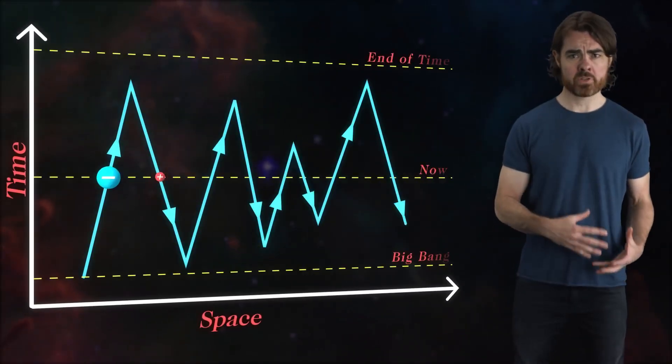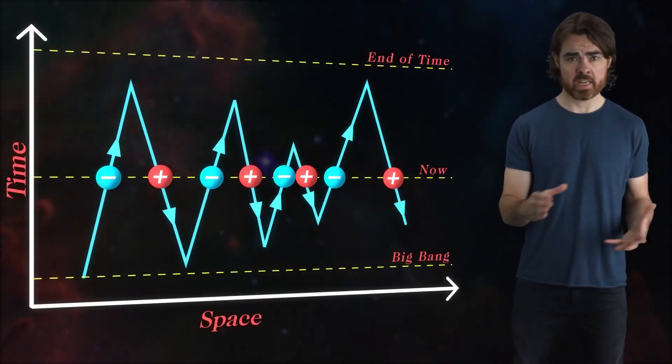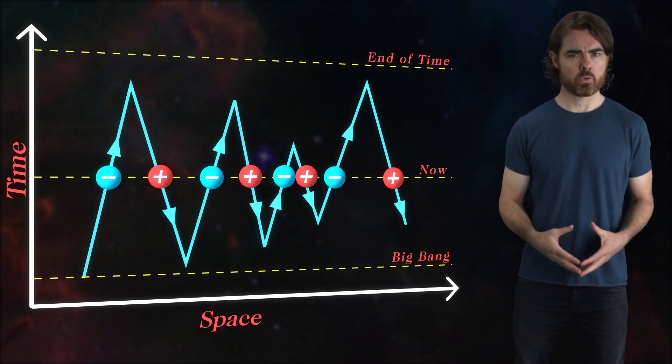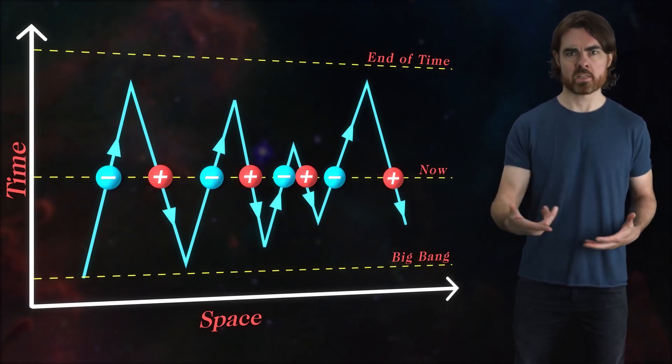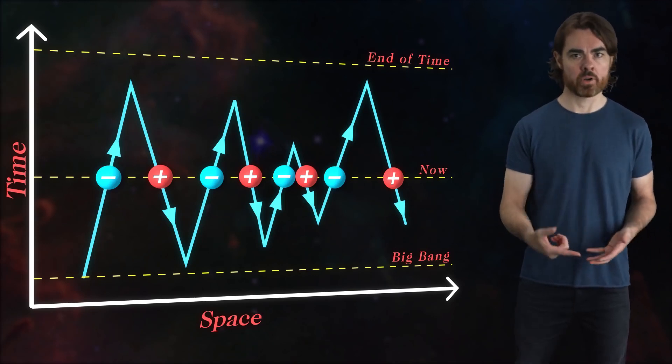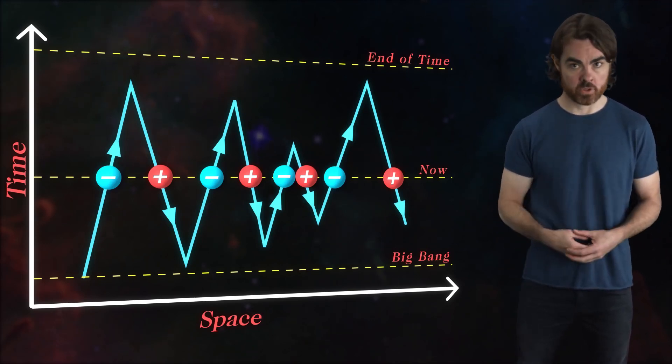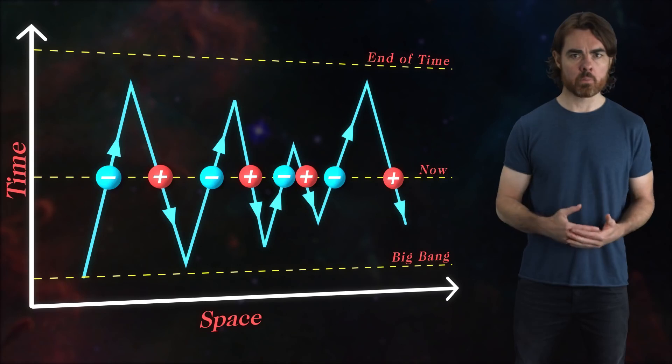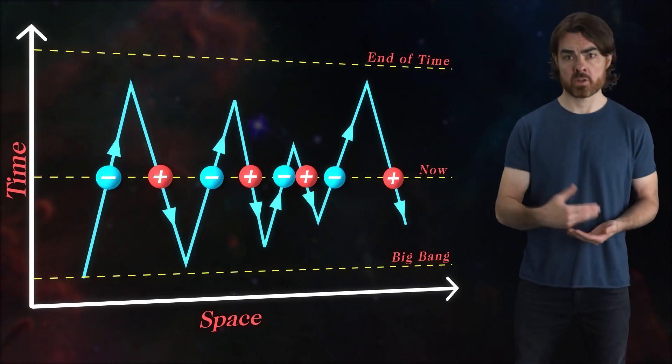Now, there are some big problems with the one-electron universe idea. The biggest is that we should see equal numbers of electrons and positrons at any time. After all, when that first electron makes it to the end of time, it needs to travel back again as a positron in order to have any more electrons. But clearly there are more forward-propagating electrons than positrons.